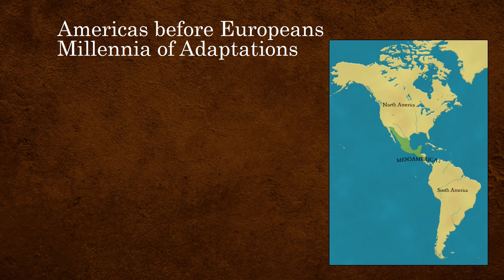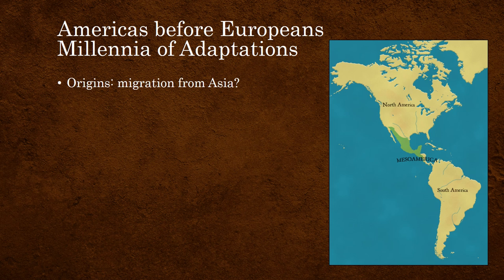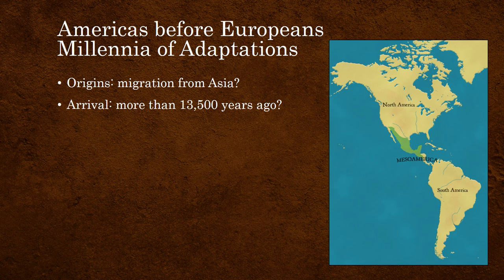First of all, despite the incredible variety of different peoples' languages and cultures, we now know that every single human being in both North and South America — from the high Arctic to the tip of South America — are all descended from one common ancestor who lived in Asia. Asian populations and Native American populations split sometime around 30,000 years ago. At that point, all the ancestors of the Americas were on their own path. They arrived in the Americas at least as early as 13,500 years ago, but potentially much earlier.